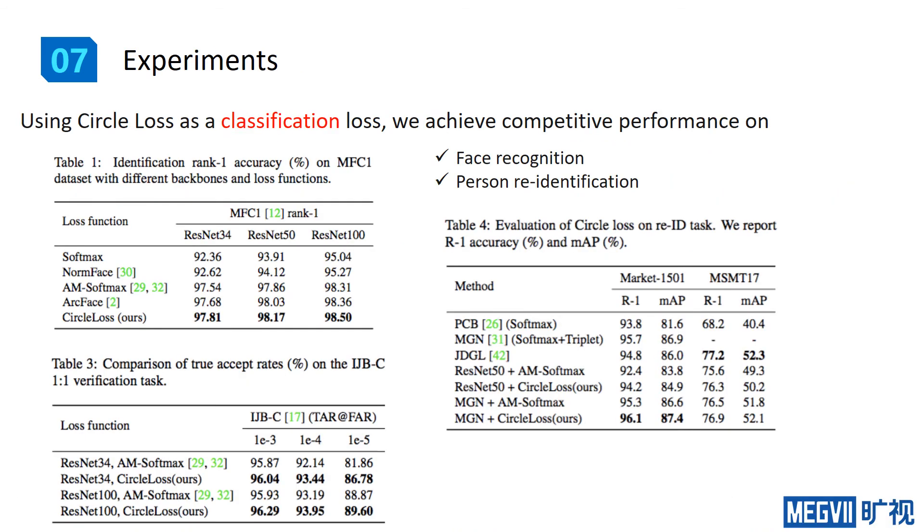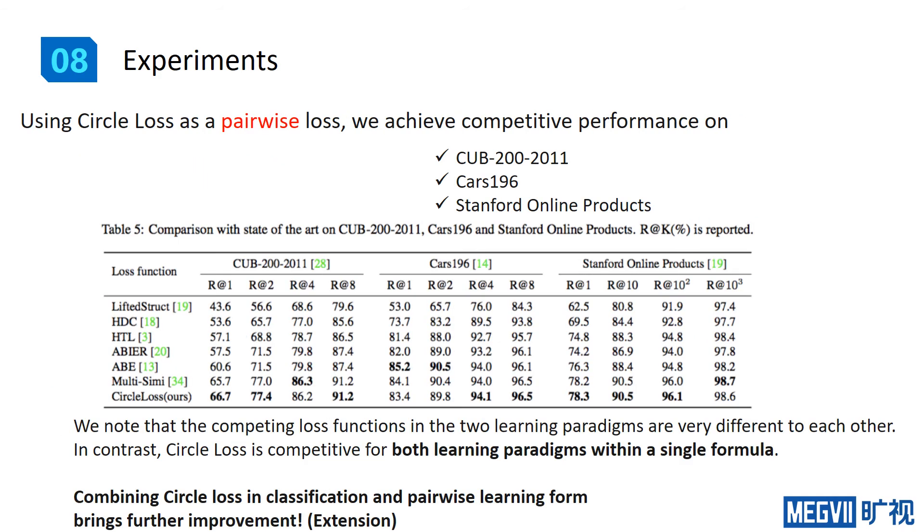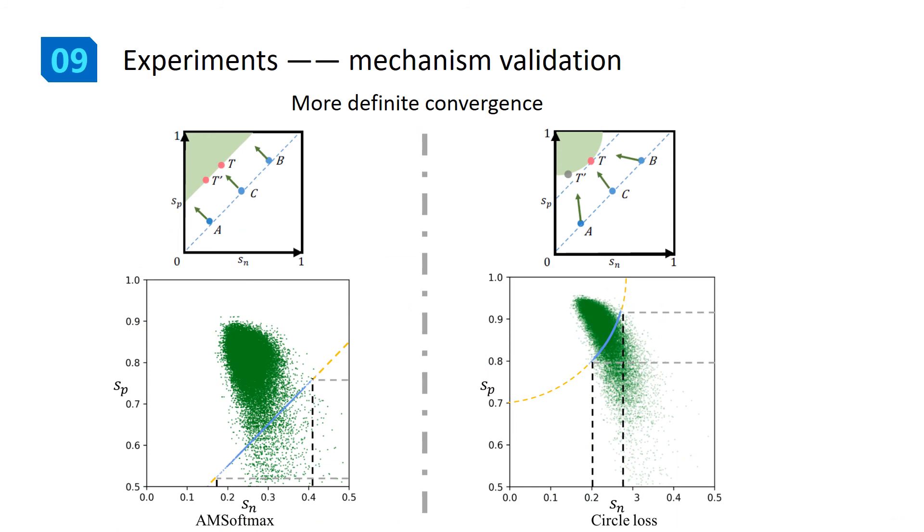Experimental results confirm that Circle Loss achieves competitive performance on face recognition, person re-identification, and fine-grained image retrieval. We also note that Circle Loss is competitive for both classification learning and pairwise learning paradigms. More importantly, we observe experimental evidence of more flexible optimization and more definite convergence for Circle Loss.